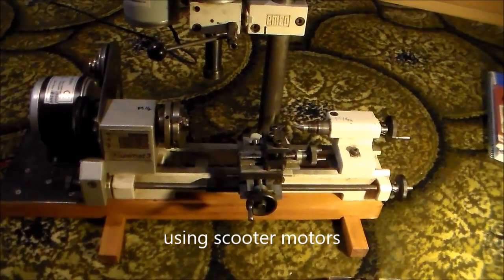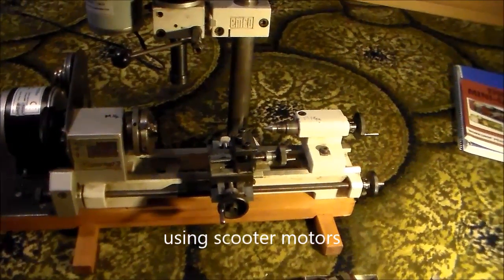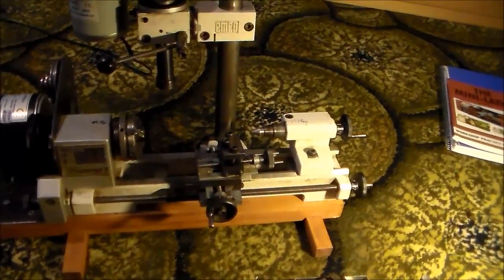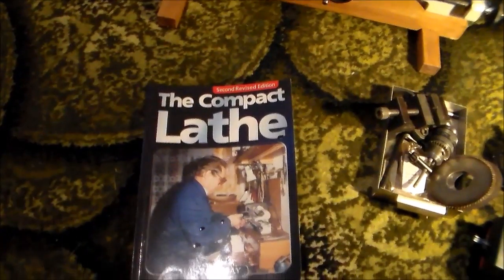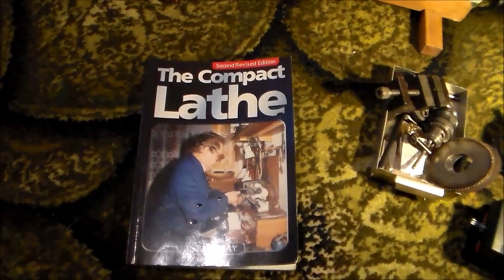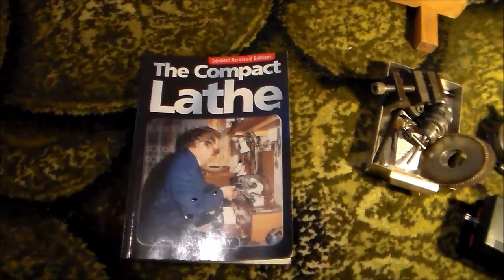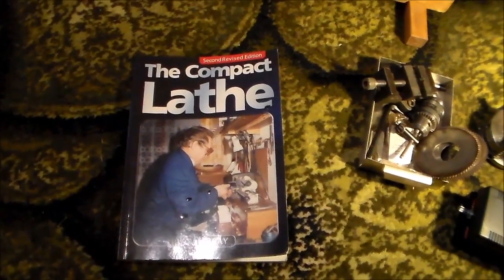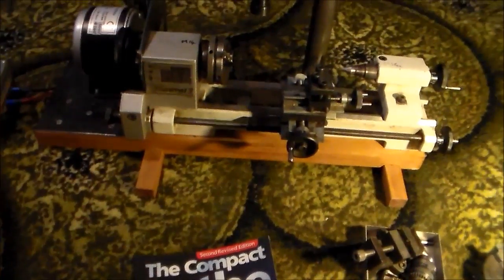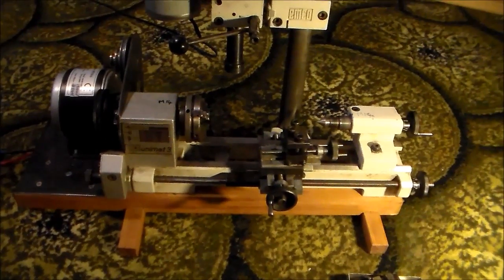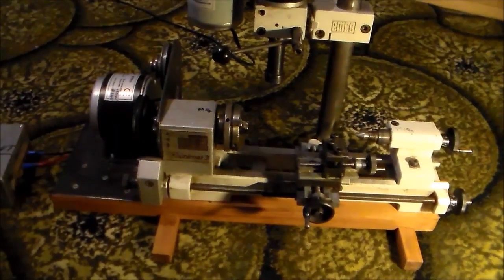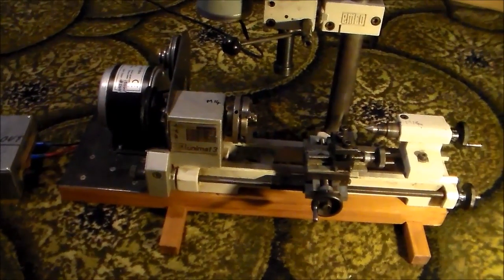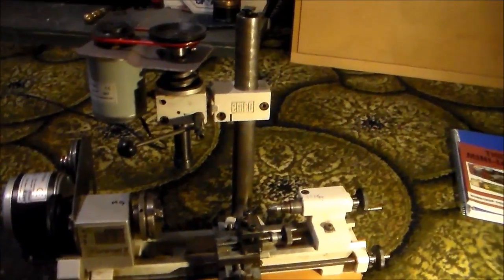The Emco Unimat 3 and Unimat 4 are small lathes, might be called micro-lathes. In one book here which mentions it, but it's mostly about the Toyo 210, it's classed as a compact lathe. The original lathe comes with one of those main motors and you have to swap the motor between the lathe operation and the milling operation.